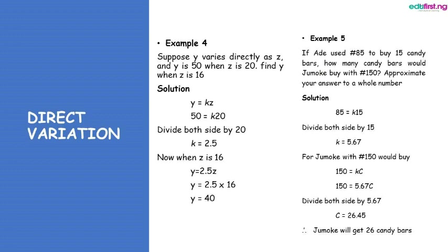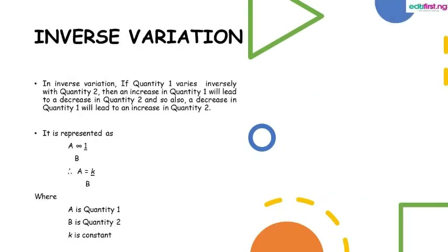Example 5: if Ade used 85 naira to buy 15 candy bars, how many candy bars would Jumoke buy with 150 naira? Approximate to a whole number. We have 85 equals k times 15. Dividing both sides by 15, k equals 5.67. For Jumoke: 150 equals 5.67 times c. Dividing both sides by 5.67, c equals 26.45, so Jumoke gets approximately 26 candy bars.